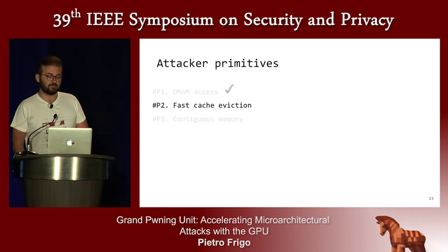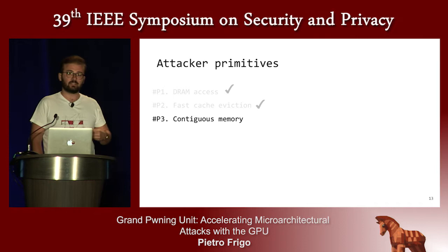We verified that the GPU caches are actually fast enough to bypass. So we have fast cache eviction and are capable of triggering bit flips. The remaining question is: how do we get contiguous memory to perform our Rowhammer attack with the two aggressor rows and the victim row?